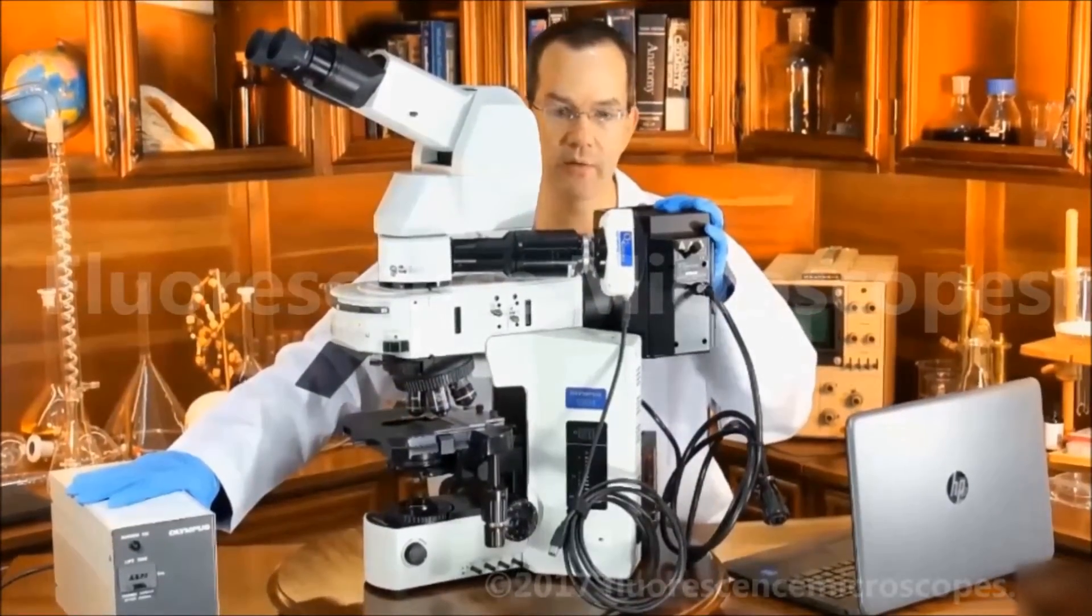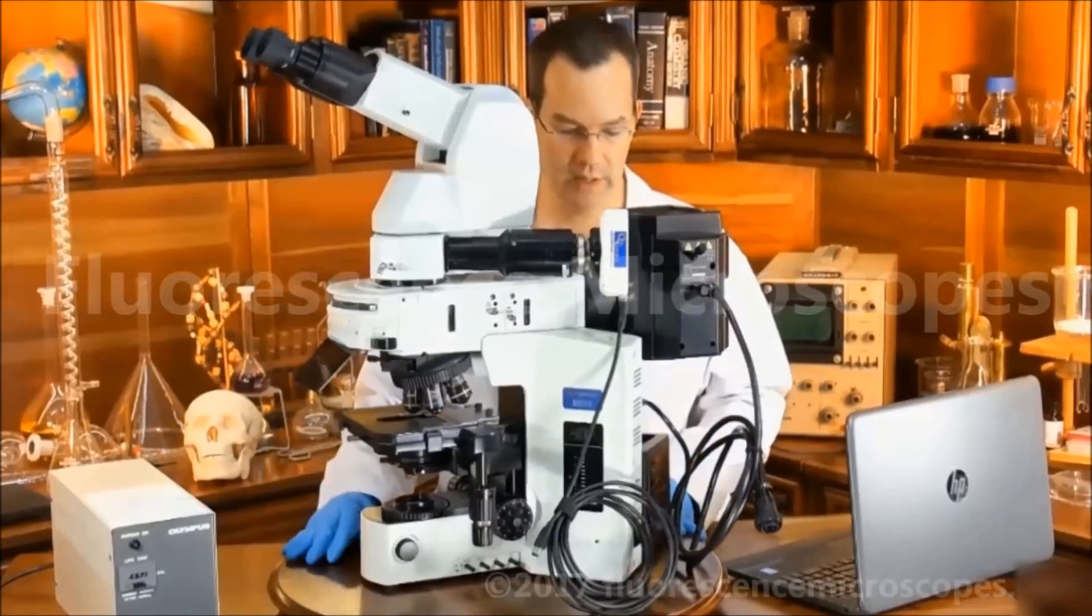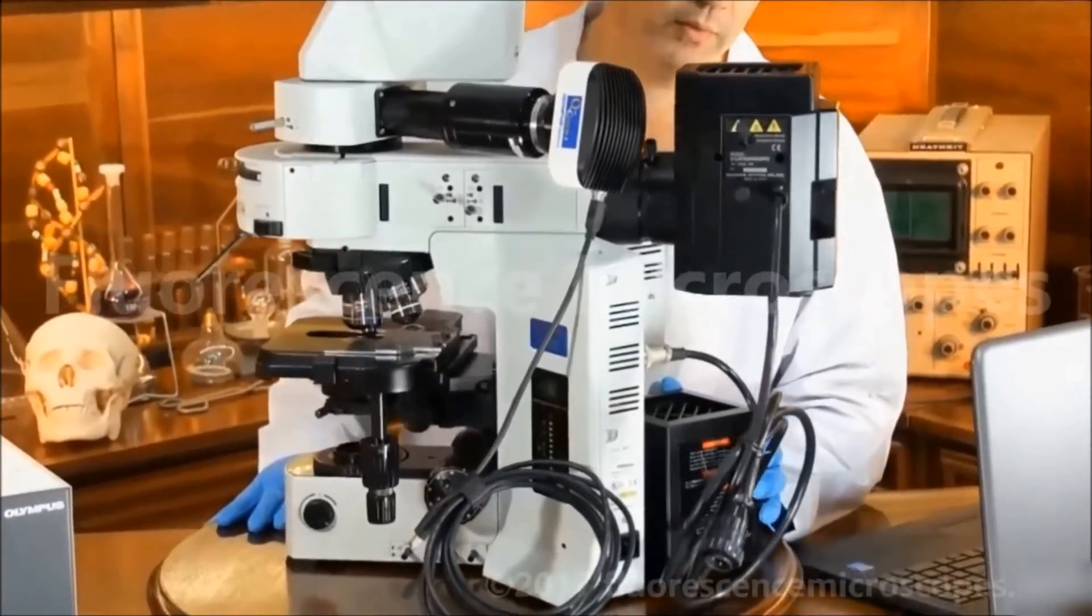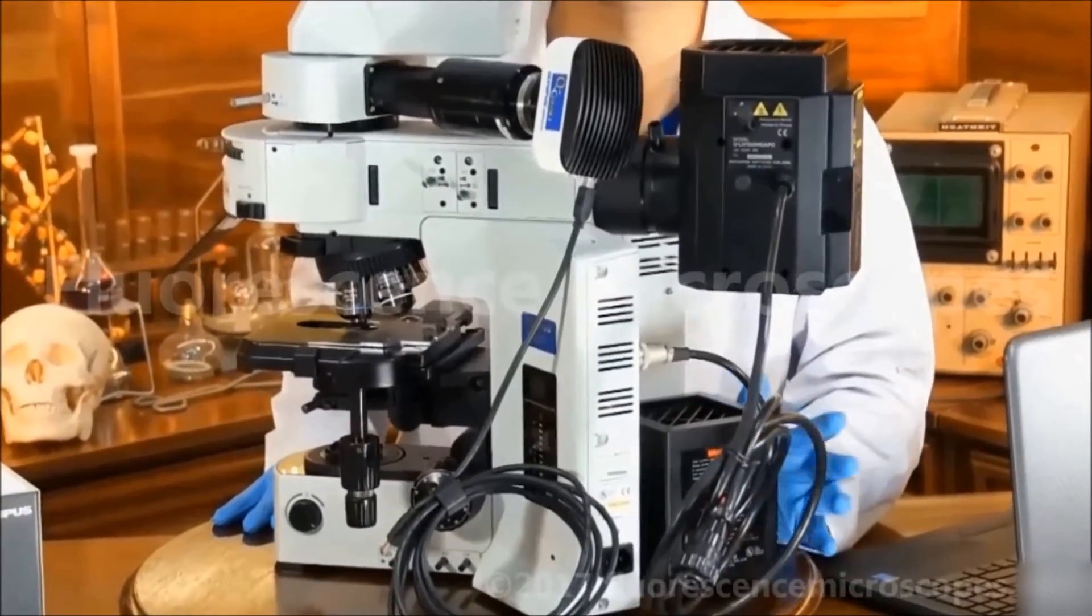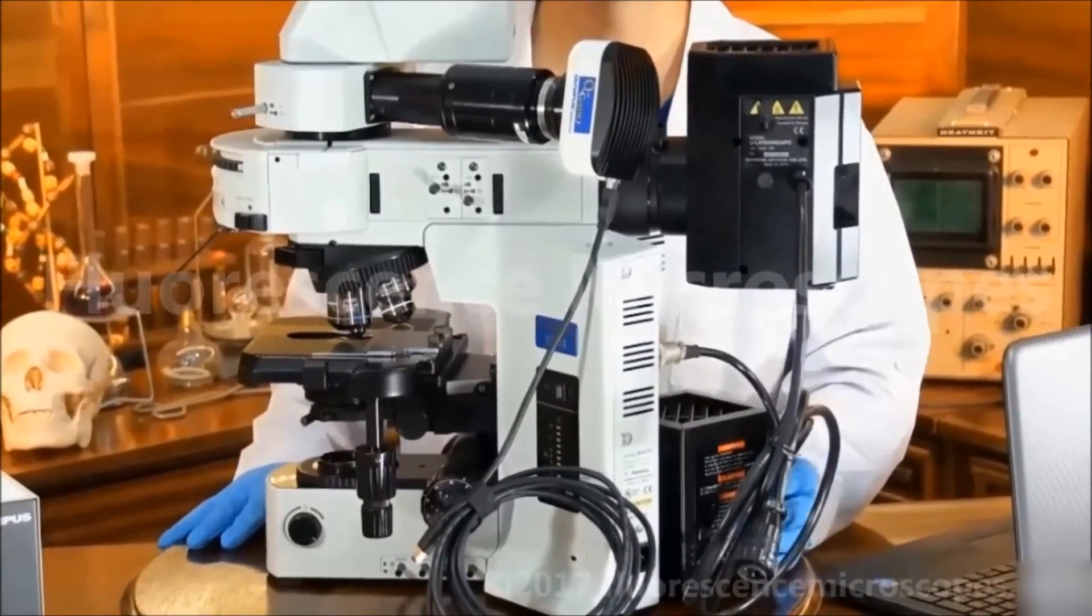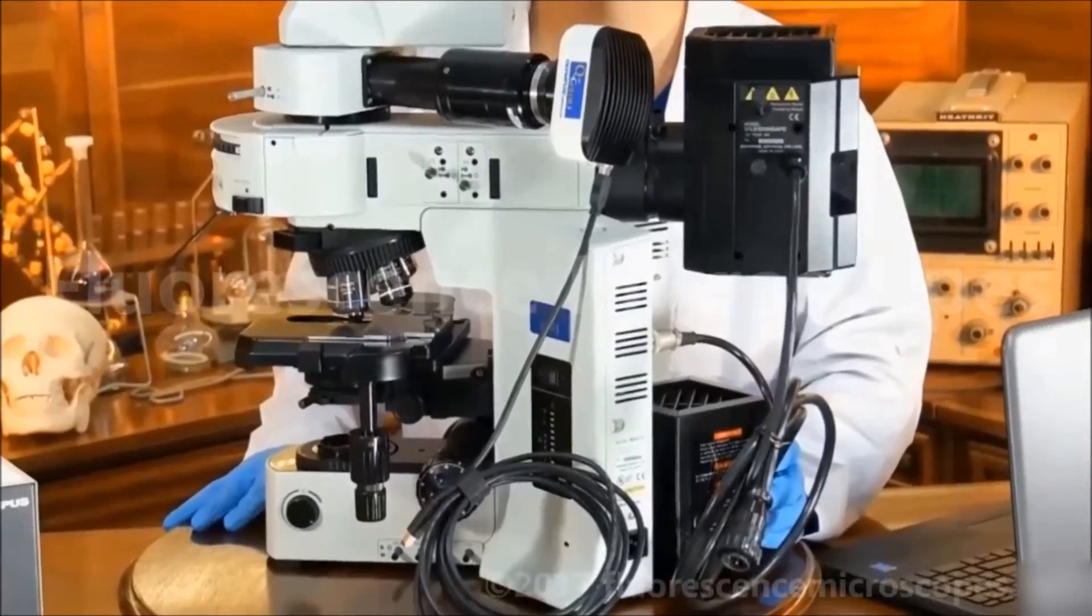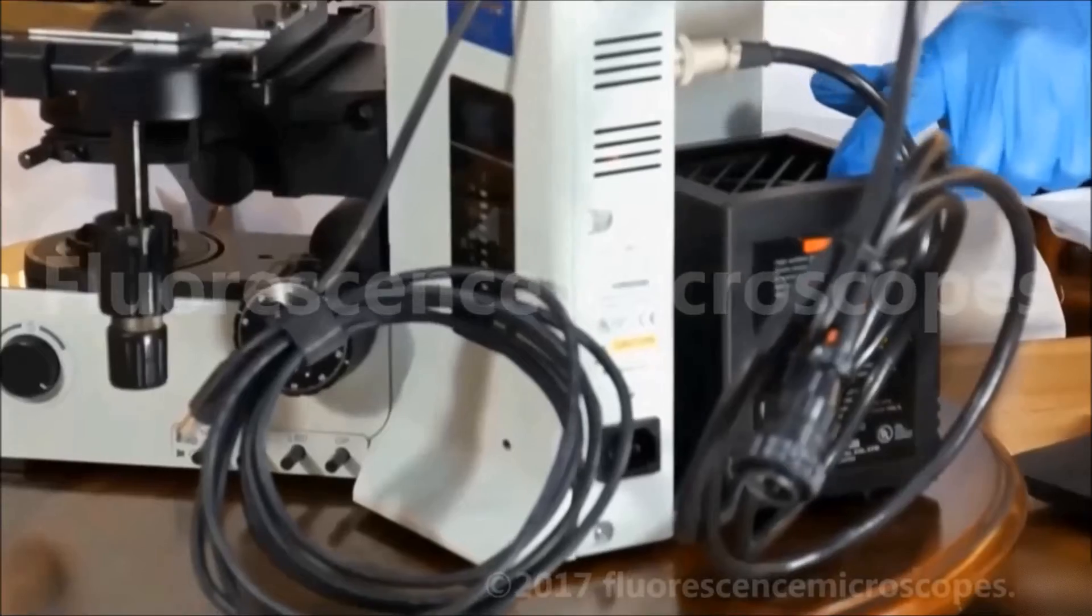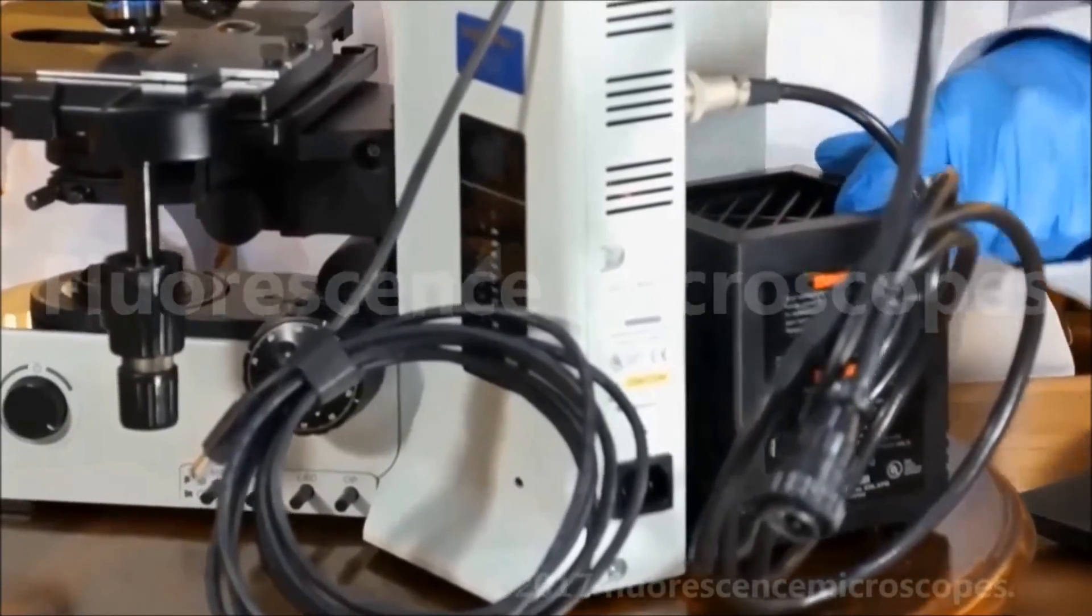This is the lamp housing. We've also got a 100 watt halogen transmitted light. We've also configured it with a 100 watt halogen transmitted light system. There's a halogen bulb, 100 watt, 12 volt inside this lamp housing.